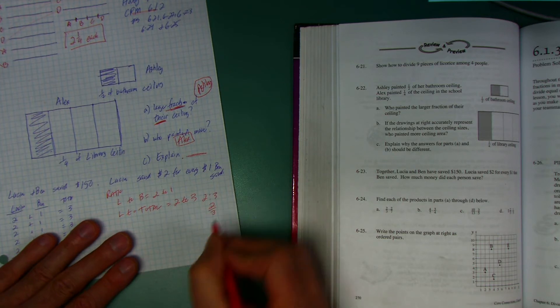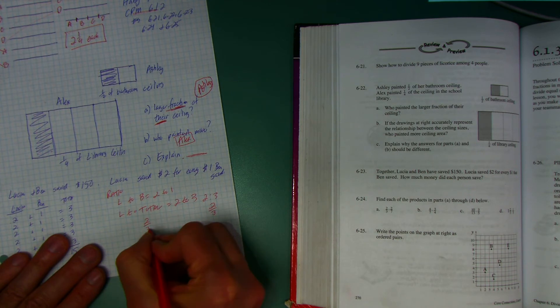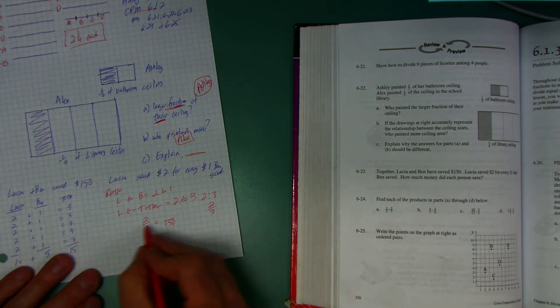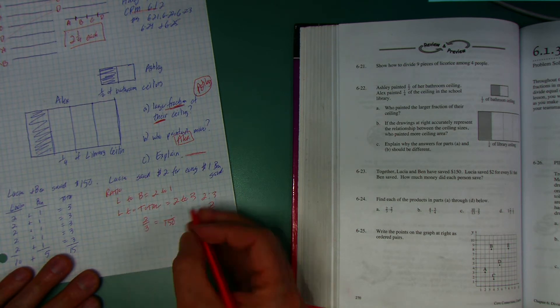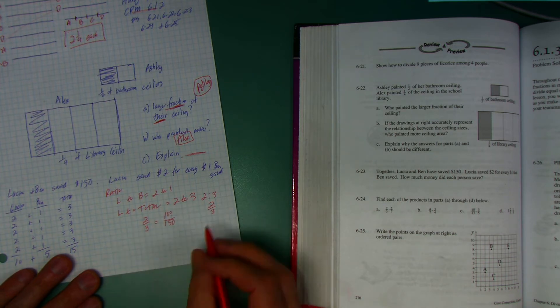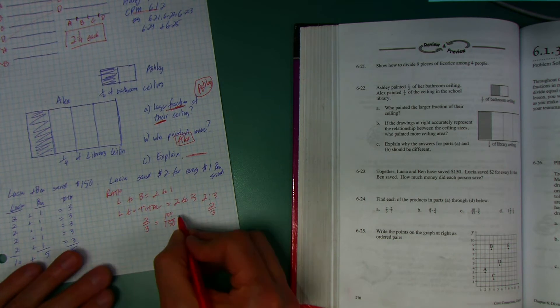You can write it like that, you can write it like this. If the total is 150, then what's going to go here? I did 3 times what to get 150? 50, right. So 2 times 50 is 100. The total Lucia should have saved would be 100.